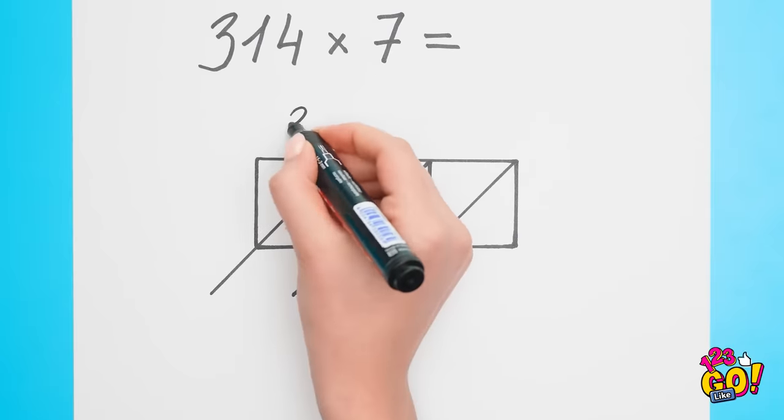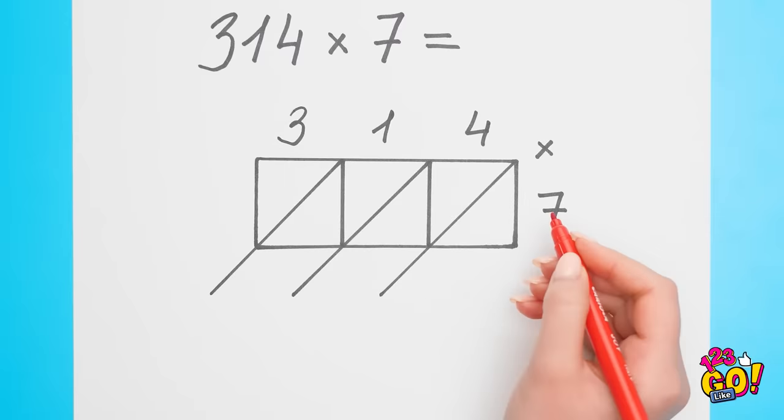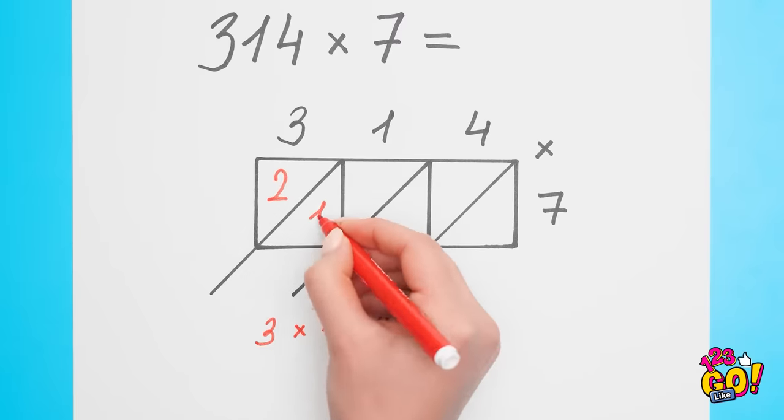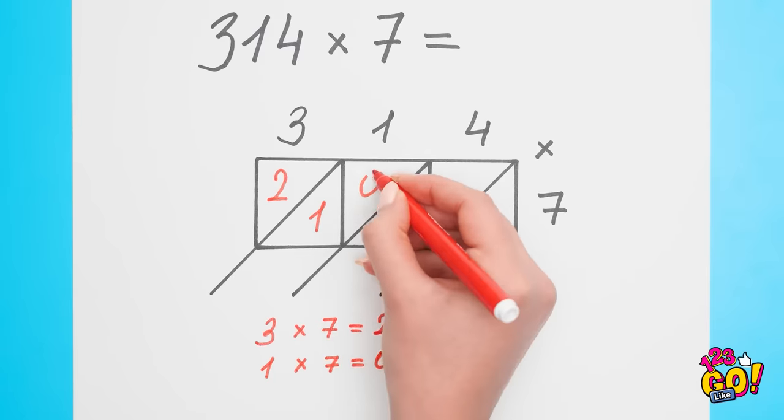I'll write the first numbers on top. And the second number on the side. Okay! Three times seven is twenty-one! So I'll write that number in this corner. Okay! Then next up, seven times one. That one's easy. Seven! That answer goes in the middle boxes.